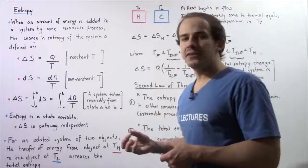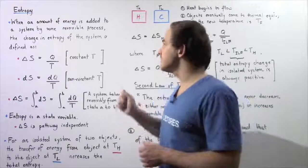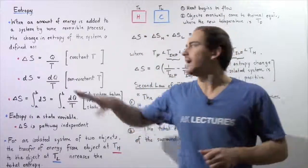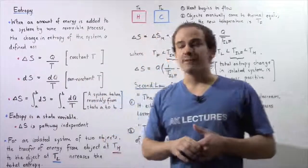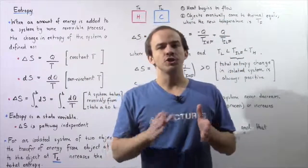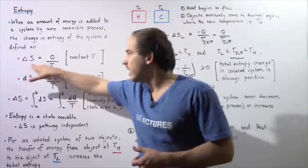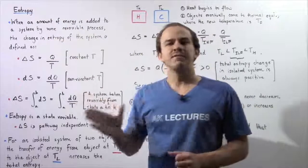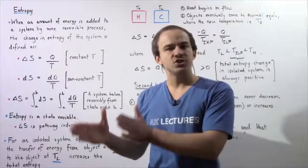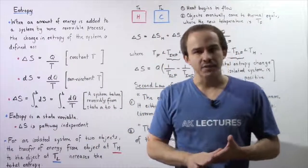When an amount of energy is added into a system by a reversible process, the change in entropy of that system is defined in the following way. If our temperature is assumed to be constant during that process, then the change in entropy given by ΔS is equal to Q divided by T, where Q is the energy that flows into our system, and T is the temperature given in Kelvins.